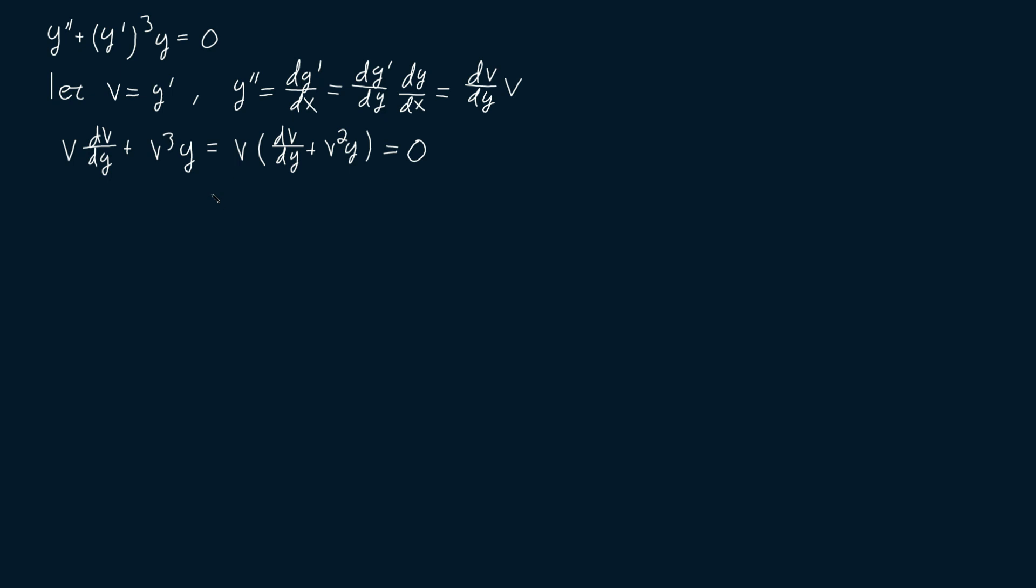Now, we see that either v is equal to zero or dv dy plus v squared y is equal to zero. If v is equal to zero or y prime is equal to zero, this then means that y would just be some constant function. And we see that y prime is equal to zero is a valid solution to our original differential equation.